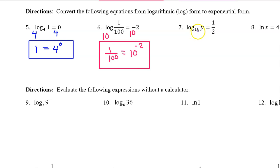On number 7, we see the base 16. So we drop a base 16 on both sides. The base 16 and the log base 16 cancel each other out, leaving behind just y. So y is equal to 16 to the 1 half power.